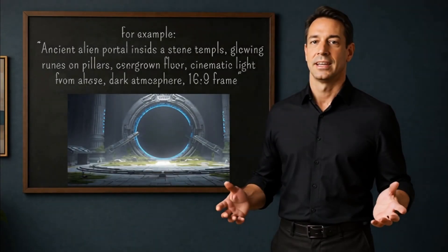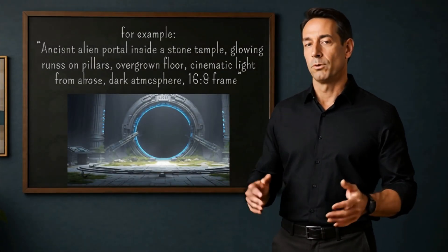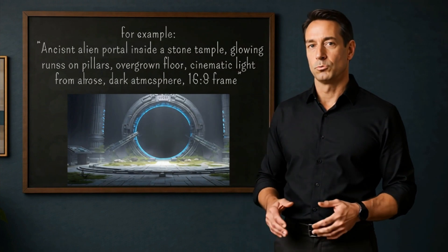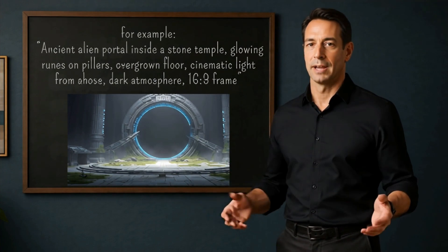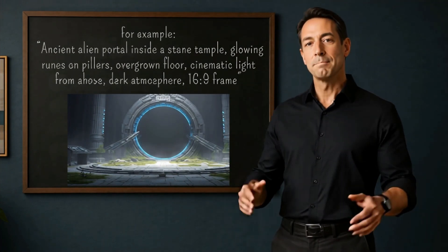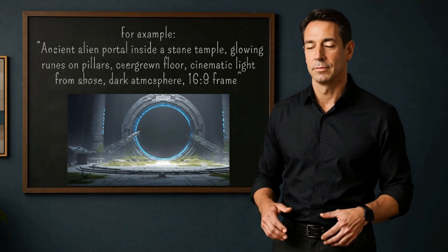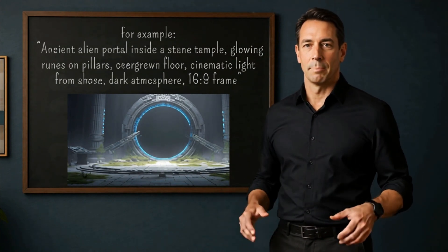Once your characters are ready, it's time to build the scenes. Think of your short film like a comic book — every frame matters. You need a background, a setting, a feeling. Use Leonardo.ai or MidJourney to generate full cinematic scenes. Describe the location, the mood, the lighting, the time of day — everything. For example: 'ancient alien portal inside a stone temple, glowing runes on pillars, overgrown floor, cinematic light from above, dark atmosphere, 16 by 9 frame.' Generate one image per scene, name each one clearly — scene one, scene two, and so on. This will save you time later.